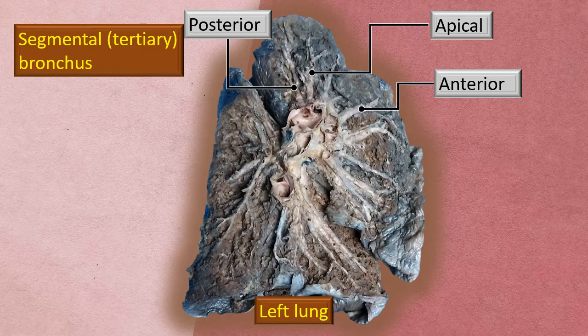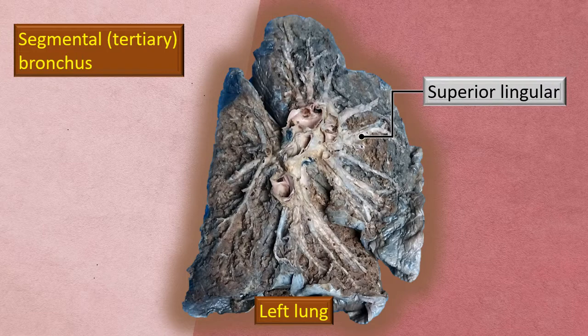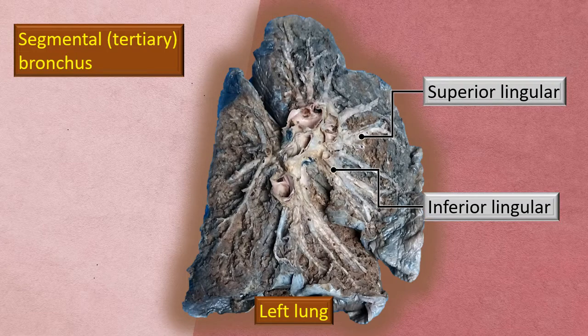The next stage is the lingular bronchopulmonary segments. These two — a superior lingular and an inferior lingular — take care of the next area of the upper lobe, that is the lingular area. Remember, this corresponds to the two components of the middle lobe of the right lung, so although there is no such demarcation, the bronchopulmonary segments are more or less corresponding.